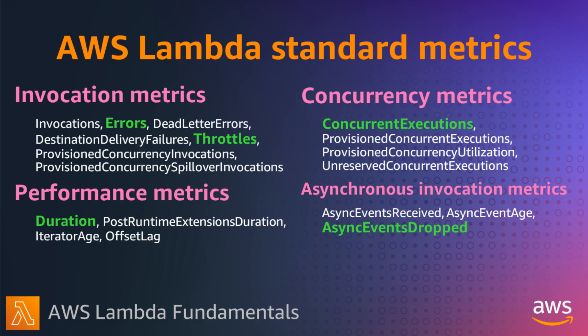Performance metrics provide performance details about a single function invoke. You can track the duration metric to capture the amount of time in milliseconds that your function spends processing an event. Lambda reports concurrency metrics as an aggregate count of the number of instances processing events across a function, version, alias, or AWS region. You can track concurrent executions to help manage your concurrency limits.